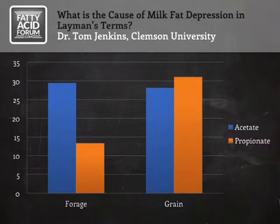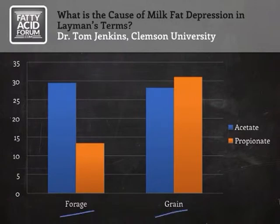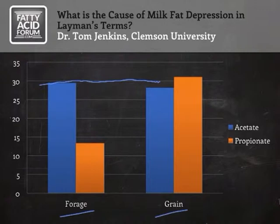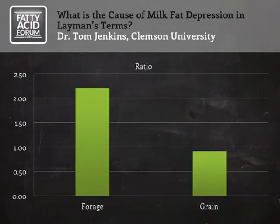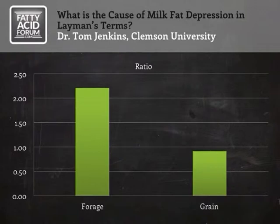However, studies done over multiple locations over a number of years have refuted this idea. This is a summary of studies that have actually measured the total amount of acetate and propionate produced in the rumen when cows are on a high-forage versus high-grain diet — shown here as the total amount produced in moles per day. Across these studies, the amount of acetate stays relatively constant — very little change. But propionate greatly increases. So the drop in acetate to propionate ratio is not due to inadequate acetate supply to the mammary gland, but rather due to a high amount of propionate production.